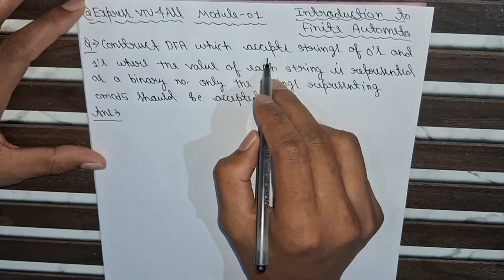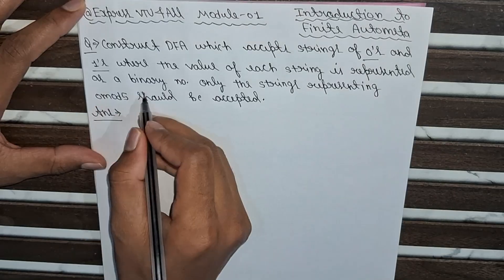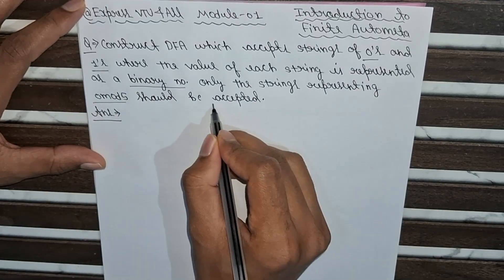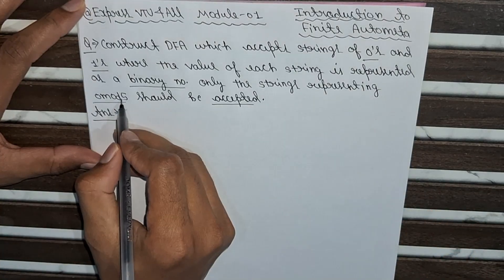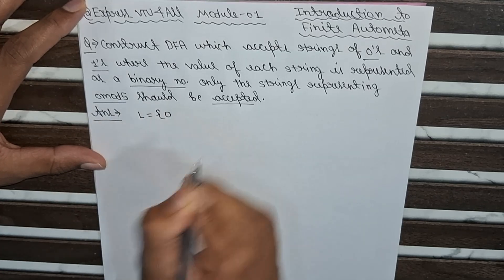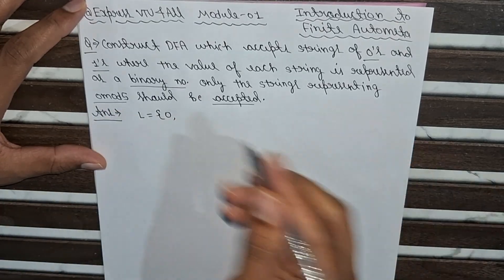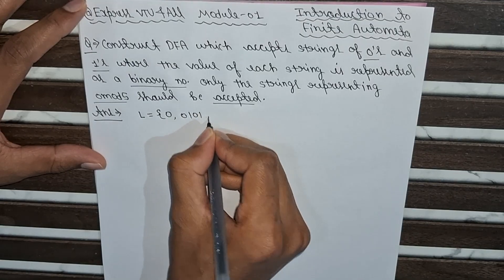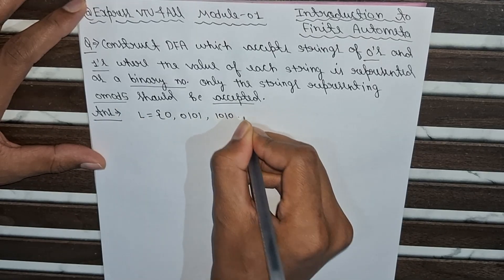The question is: construct a DFA which accepts strings of 0's and 1's where the value of each string is represented by a binary number. Only the strings representing 0 mod 5 should be accepted. In this question we have to accept the strings which are divisible by 5, so the remainder will be 0. The language accepted includes: 0, then 5 written in binary as 0101, then 10 which is 1010, and so on.